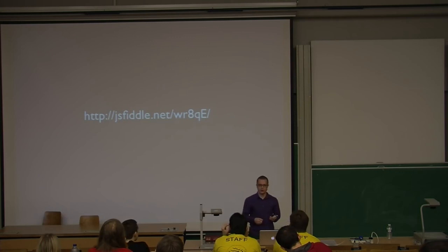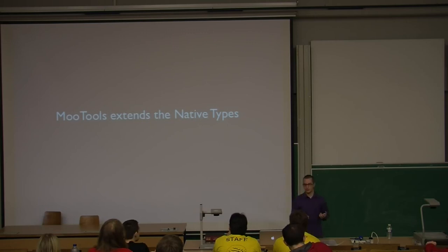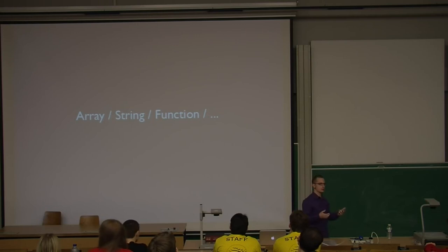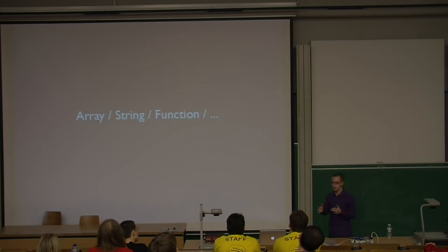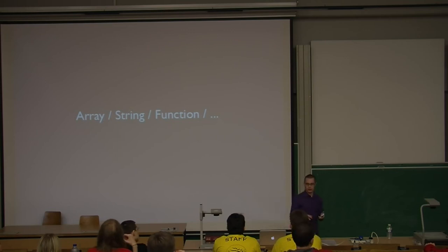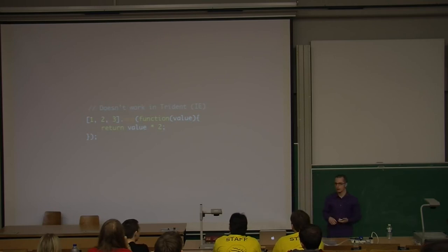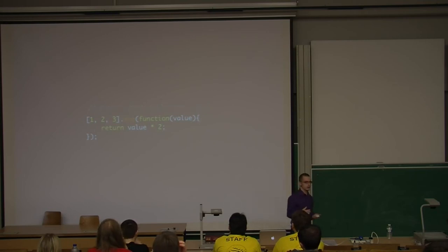MooTools extends the native types. JavaScript has common data types like Array, String, Function, and more. JavaScript offers the incredible possibility to extend those native data types — so we can add methods to every array and every function. For example, we create an array and call the map function on it. This doesn't work in IE6, IE7, or IE8. With MooTools, you don't have to think about this — we provide the method, you can just use it. We don't care about implementation details in a specific browser; we provide DOM abstraction and a way to work around browser issues on a much lower level.